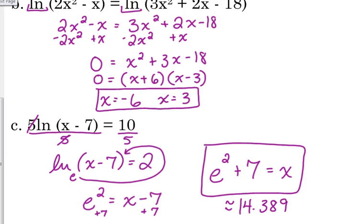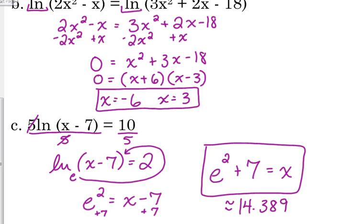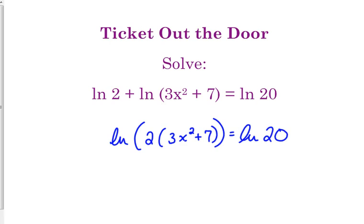I had originally intended for this to be a ticket out the door problem, but let's just do it as another example. The natural log of 2 plus the natural log of 3x squared plus 7 is equal to the natural log of 20. If you want to write it on your ticket out the door, maybe you can. Actually, I'm going to give you a second. So if you're not quite sure where to start, we have two logarithms, two natural logs, on the left side. They're being added together. We need to combine them. That's why we learned those rules about combining logarithms. We need to combine them into a single logarithm. When you're adding them, it becomes the logarithm of the product.